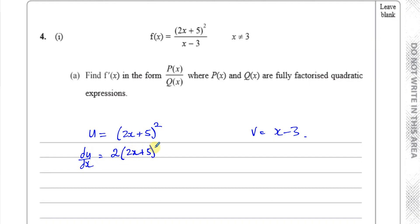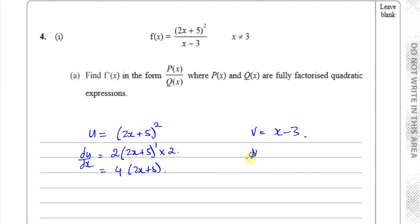This is a polynomial-type function, so you multiply by the power, take one from the power, and then multiply by the derivative of what's inside the function. If you differentiate 2x plus 5, you get 2. So that gives you 4 times (2x plus 5). I'll leave it like that for now. And for v, dv/dx is just 1.